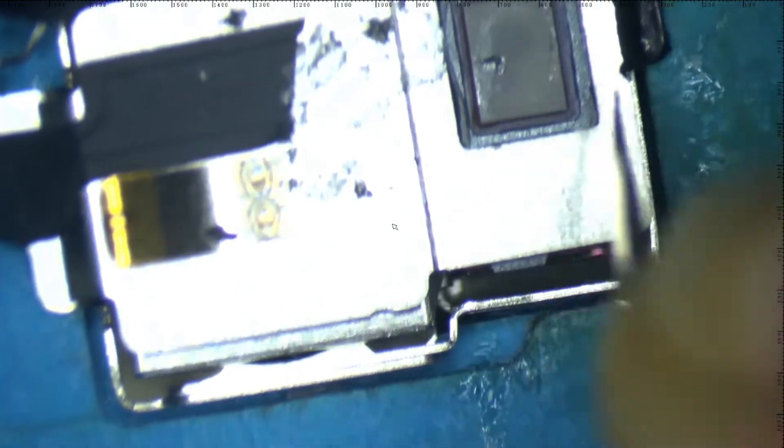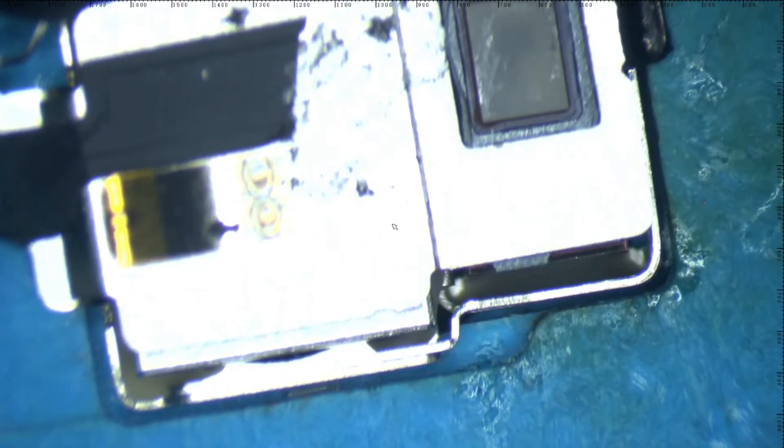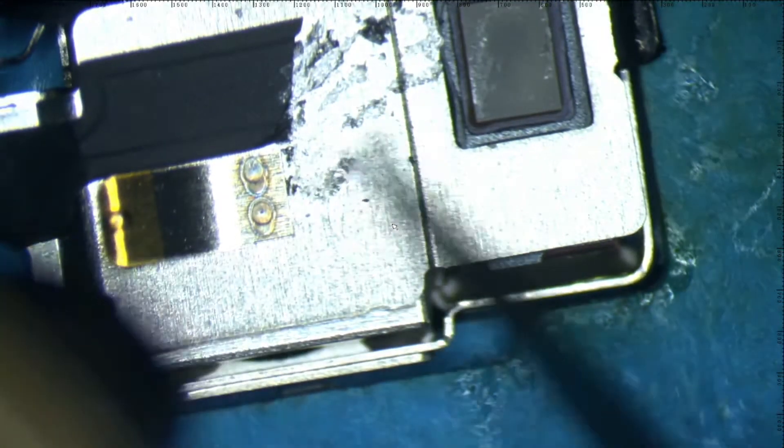You need to mark the flex cable just to know the right position of the dot projector when you glue it back. Then apply low heat to remove the flex cable from the housing.